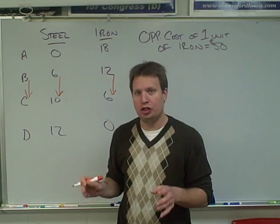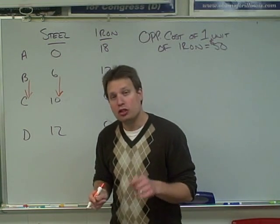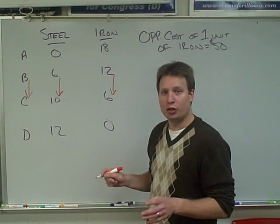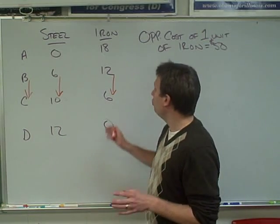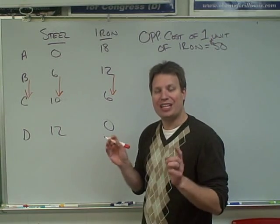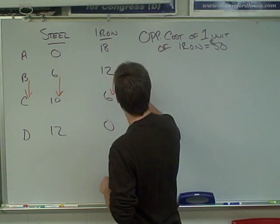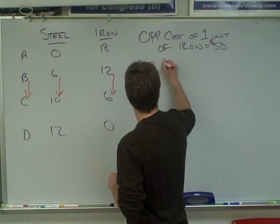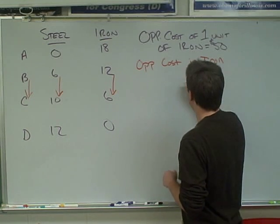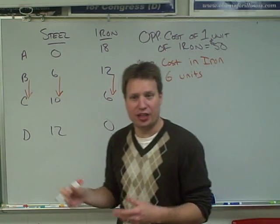Now, opportunity cost is what you give up to produce something else. When you go from alternative B to alternative C, you're going to notice that you lose production of iron. And so the opportunity cost in the number of units is 6. You give up 6 units of iron. So what we would say is the opportunity cost in iron equals 6 units — 12 minus 6 equals 6.